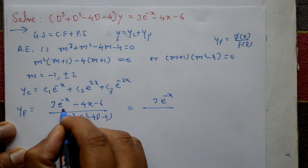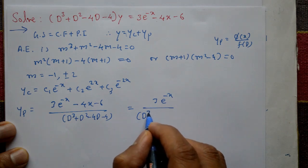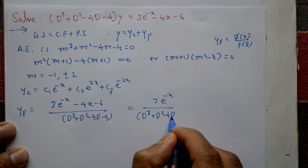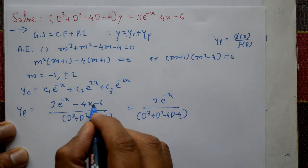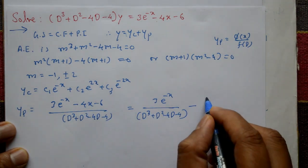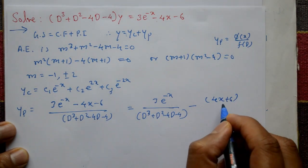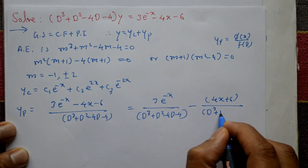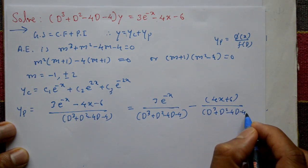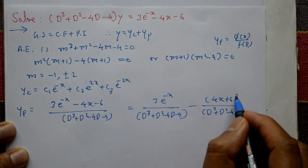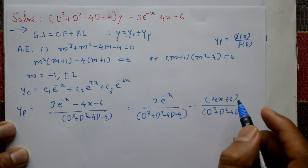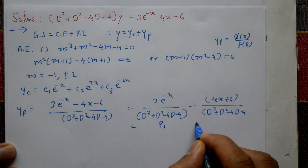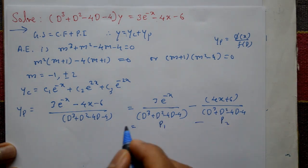So P1 = 3e^(-x) / (D³ + D² - 4D - 4), which is Type 1. And P2 = -(4x + 6) / (D³ + D² - 4D - 4), which is Type 2. The particular integral yp = P1 - P2.